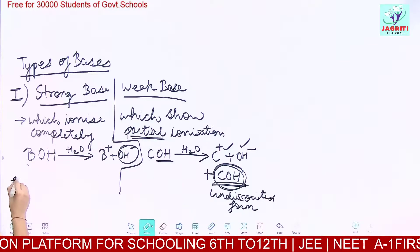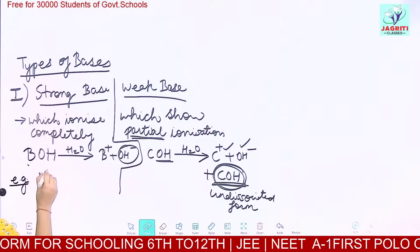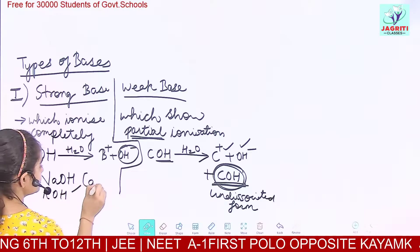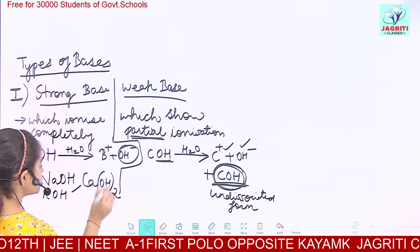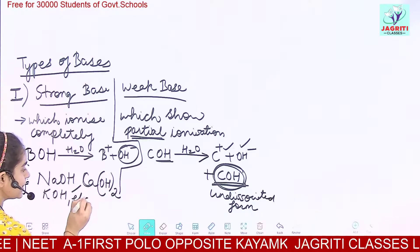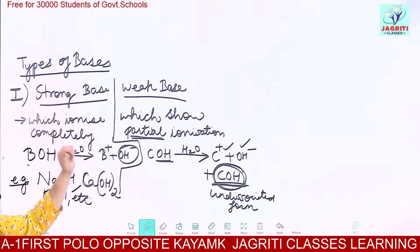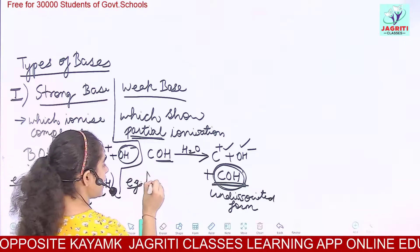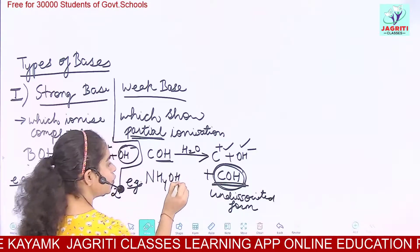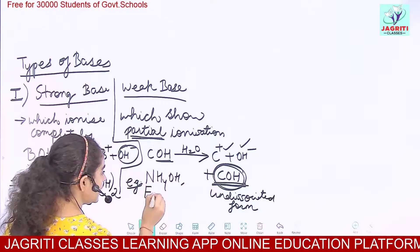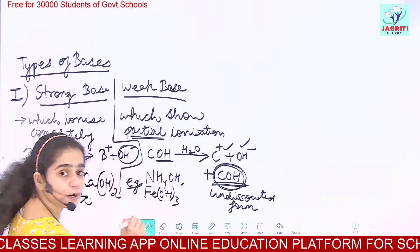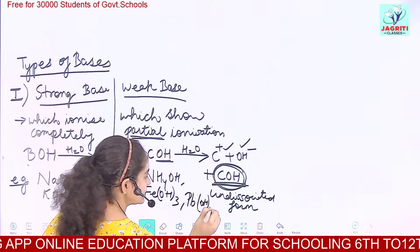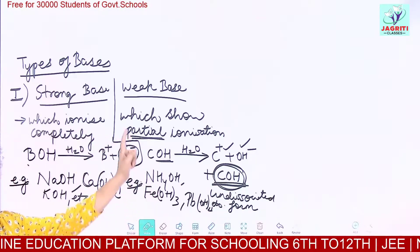Examples of strong bases are NaOH (sodium hydroxide), potassium hydroxide, and calcium hydroxide Ca(OH)₂. For weak bases, we have ammonium hydroxide NH₄OH, ferric hydroxide Fe(OH)₃, and lead hydroxide Pb(OH)₂.